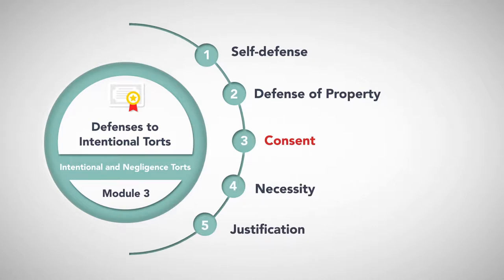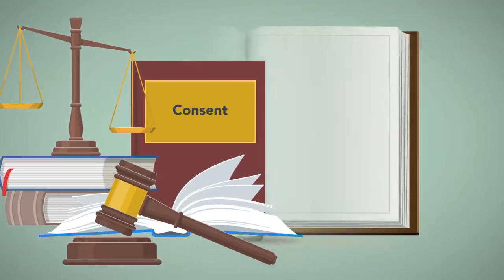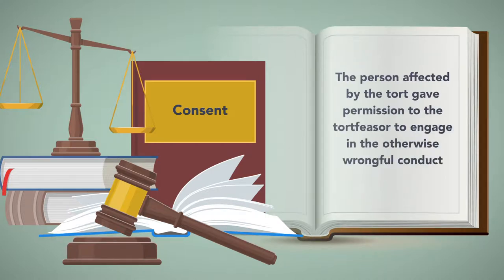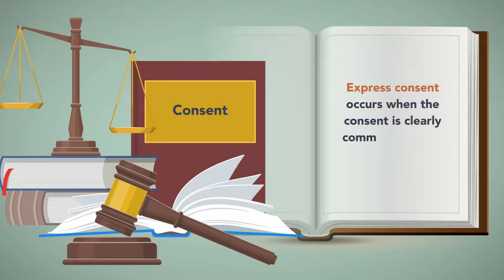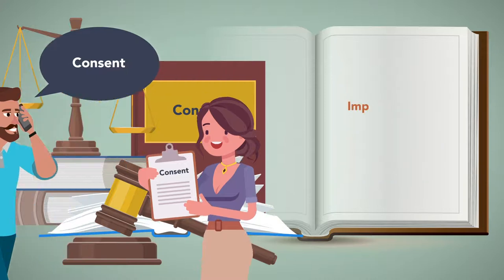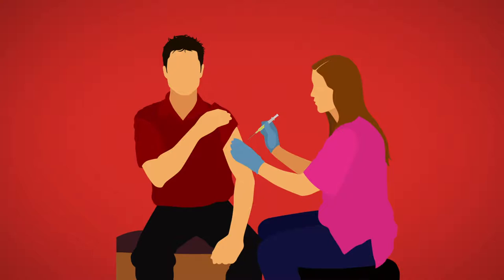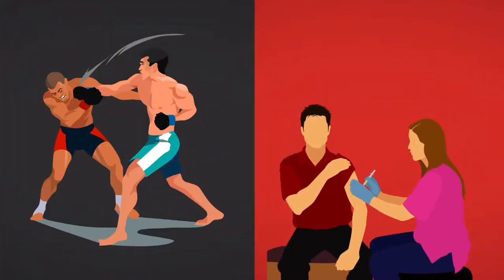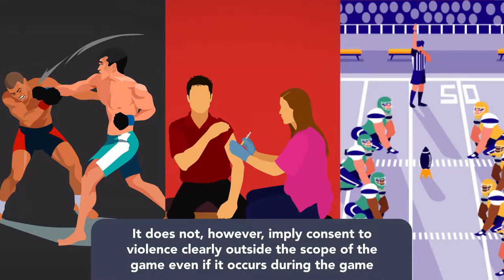Consent is another common defense to intentional torts. It asserts that the person affected by the tort gave permission to the tortfeasor to engage in the otherwise wrongful conduct. There are three types of consent: express, implied, and assumed. Express consent occurs when the consent is clearly communicated by the victim verbally or in writing. Implied consent occurs via actions or silence. For example, going into a doctor's office and exposing your arm when the doctor is giving injections implies consent to be stuck with a needle. Similarly, participating in a boxing match implies consent to be punched, while participation in a football game implies consent to be tackled or blocked. It does not, however, imply consent to violence clearly outside the scope of the game, even if it occurs during the game.